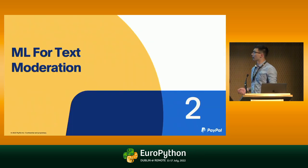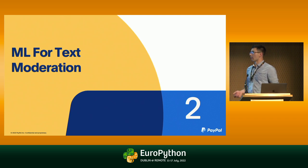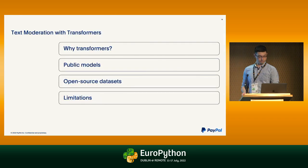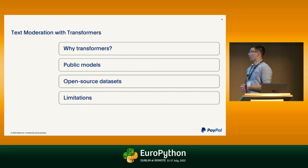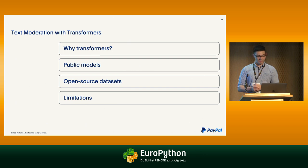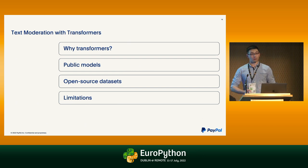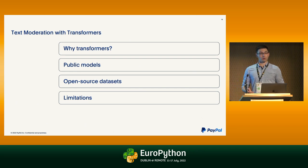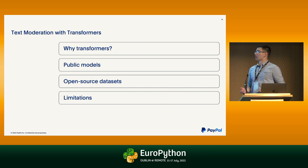Moving on, I'll talk about how we use ML for text moderation. A couple of big topics: firstly why we might want to use transformers — spoiler alert, we really like transformers. Then a couple of public models and public datasets you could potentially use to build a moderation service from the ground up. And finally, a couple of limitations of those models and datasets.